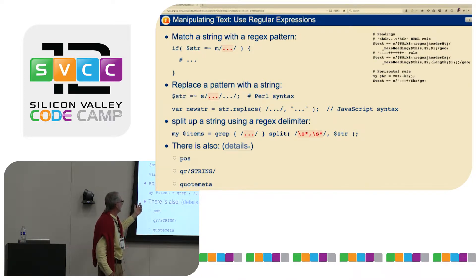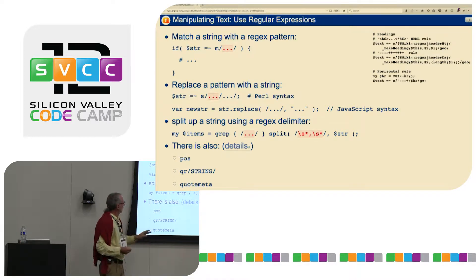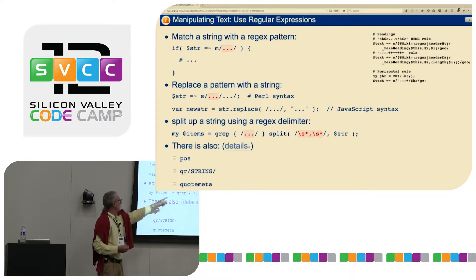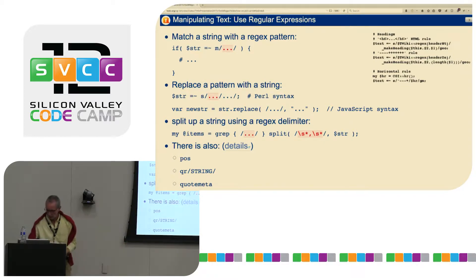Another example: you want to split up a string that has a comma and maybe optional spaces before and after the comma. In Perl syntax, you split the string, pipe that into a grep, and you have the result as an array. There are other syntaxes as well that we won't go into detail.